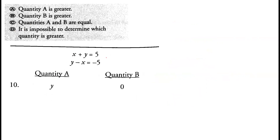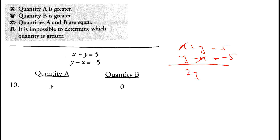X plus y equals 5 and y minus x equals negative 5. Adding both equations, the x terms cancel out, giving 2y = 0, so y = 0. Hence option C is correct.